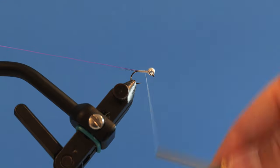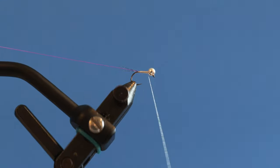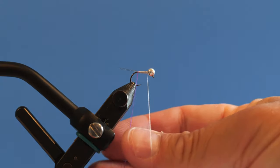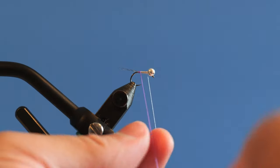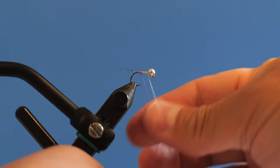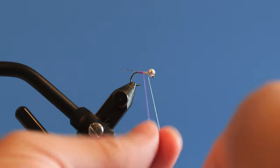I run touching wraps all the way back just like this. I want touching wraps because I want this white Veevus thread to cover the color of the hook, because it helps the thread shine when you're fishing this fly. The thread really gets brighter if you have a white under base. Then I'm just going to take that thread and advance it forward.